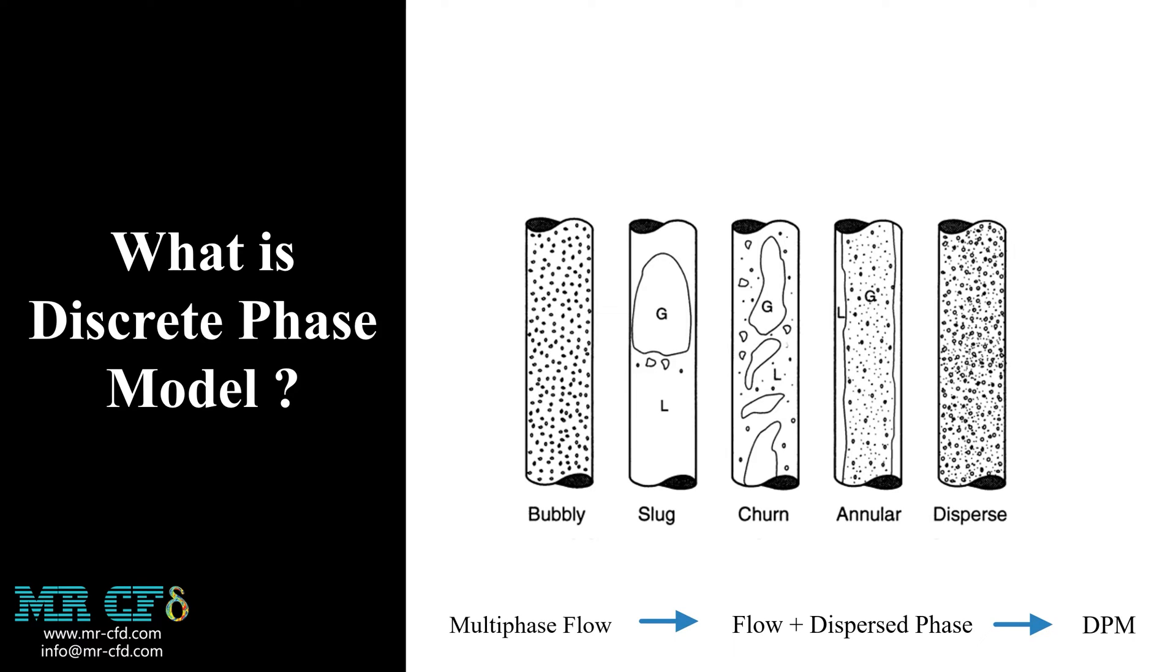So, we need to know first: what is the discrete phase model? The discrete phase model is a computational fluid dynamics model used to simulate the motion and interaction of discrete solid or liquid particles suspended in a fluid. The DPM model tracks the motion of each individual particle as it moves through the fluid and calculates the forces acting on it due to the fluid flow and other particles.